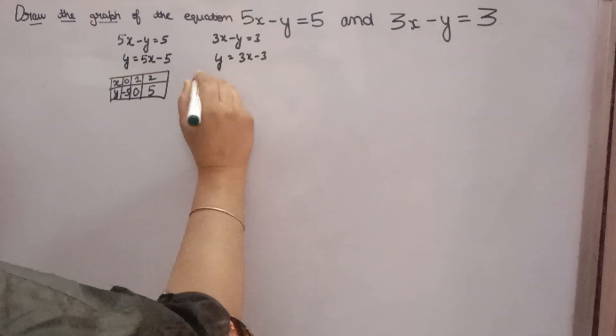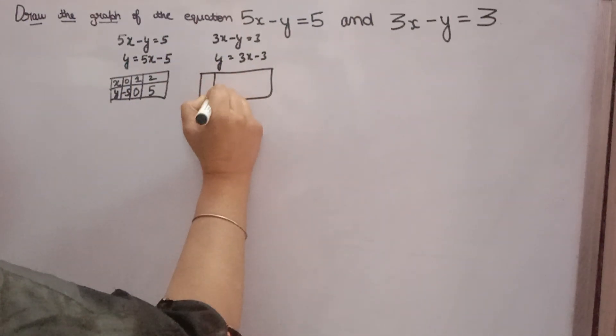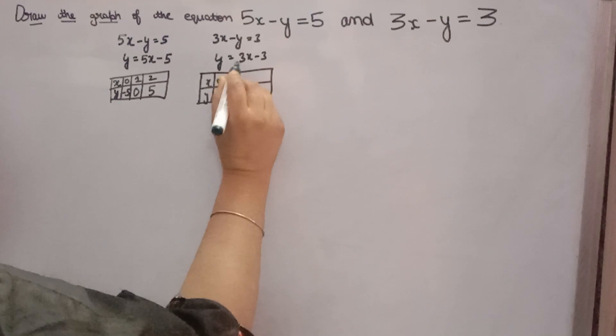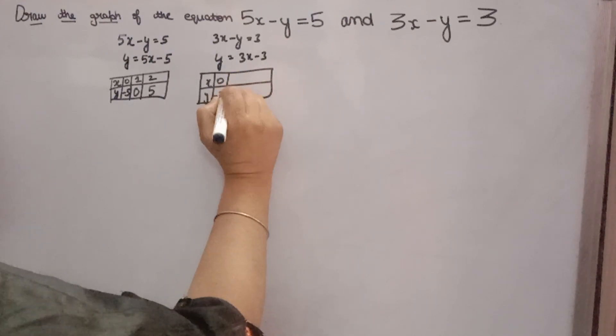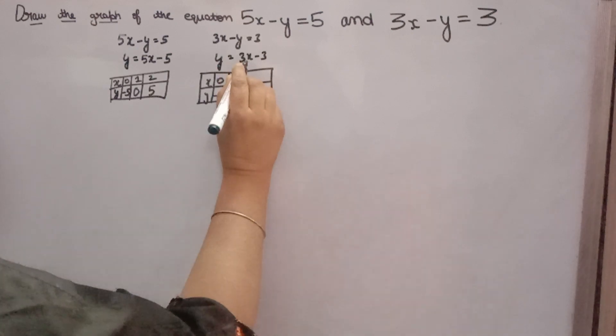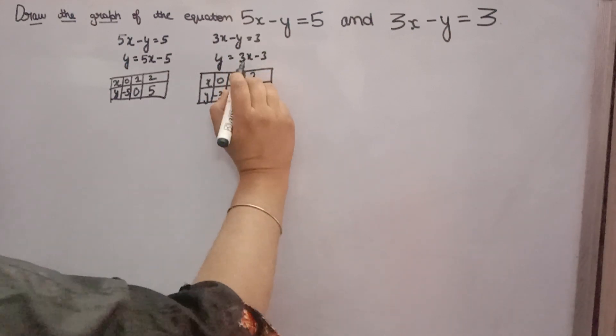Now table for the second equation. Here also you will give different values of x. x is 0, y will come minus 3, 3 into 0 is 0, 0 minus 3 is minus 3. Now x is 1, y will come 3 into 1 is 3, 3 minus 3 is 0. Then x is 2, y will come 3 into 2 is 6, 6 minus 3 is 3.